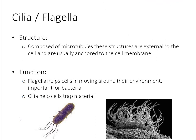Moving on to some interesting cellular components: cilia and flagella. These are structures external to the cell, not inside it. Structurally, they are composed of microtubules and are usually anchored to the cell membrane. Functionally, flagella help cells move around their environment — important for bacteria, as shown by the little tails in the diagram. Cilia help cells trap material; for example, cilia from epithelium cells of a human gut help trap food for breakdown.